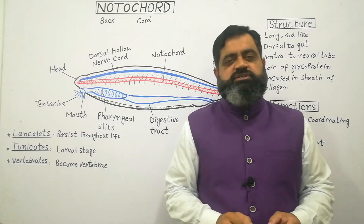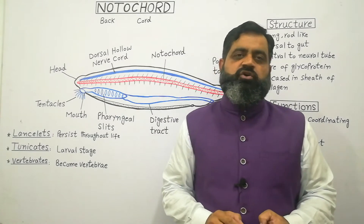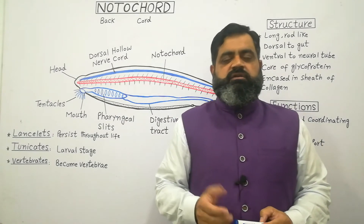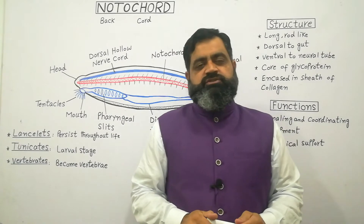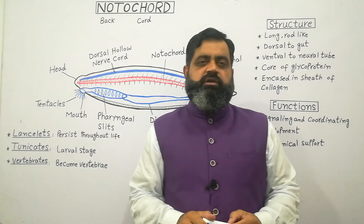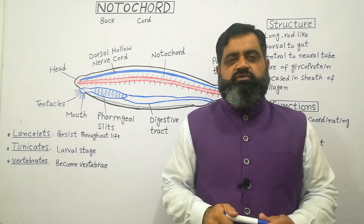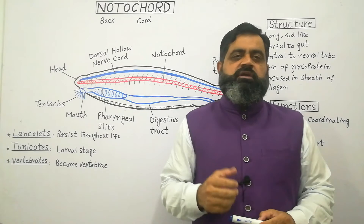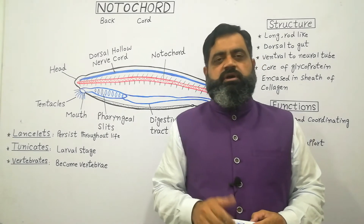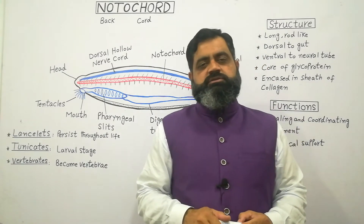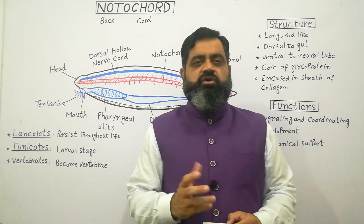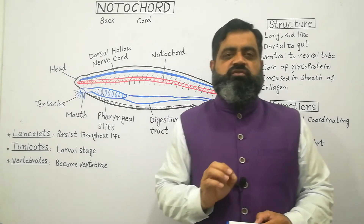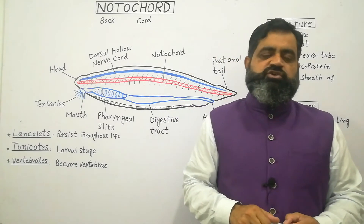Notochord is a structure which is present in all chordates, either lower chordates or higher chordates, including cephalochordata, tunicates, fishes, amphibians, reptiles, birds, and mammals. They all contain notochord at one stage of their life.